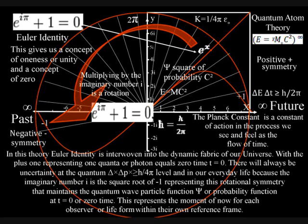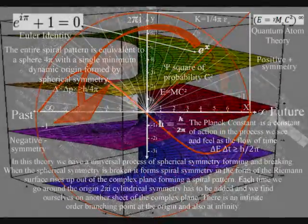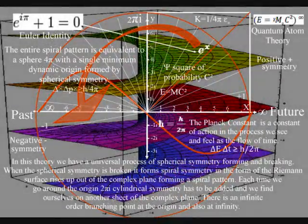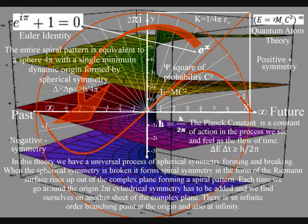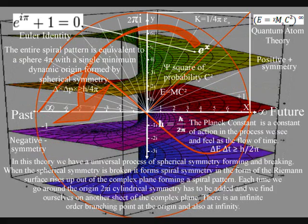To understand this further, we have to use the next diagram that shows how this spherical symmetry breaks, forming spiral symmetry that has line symmetry for the arrow of time. When the spherical symmetry is broken, it forms spiral symmetry in the form of the Riemann surface rising up out of the complex plane, forming a spiral pattern.